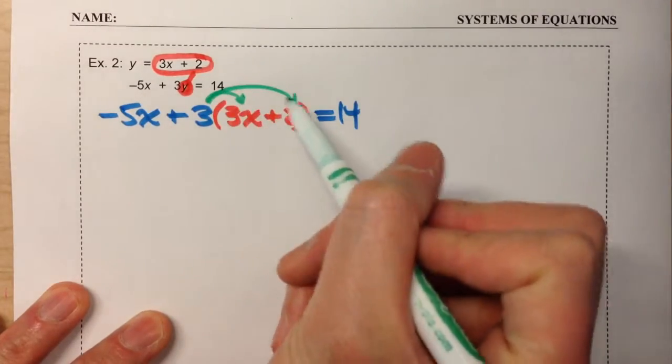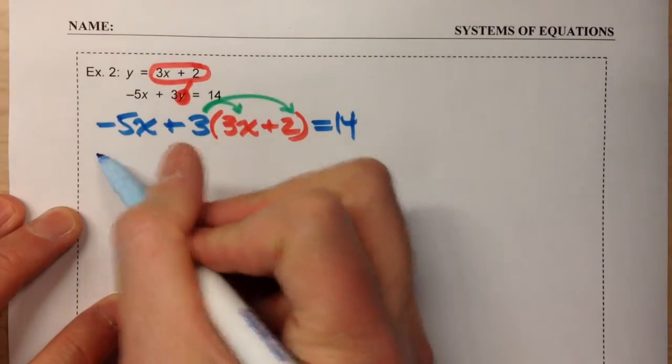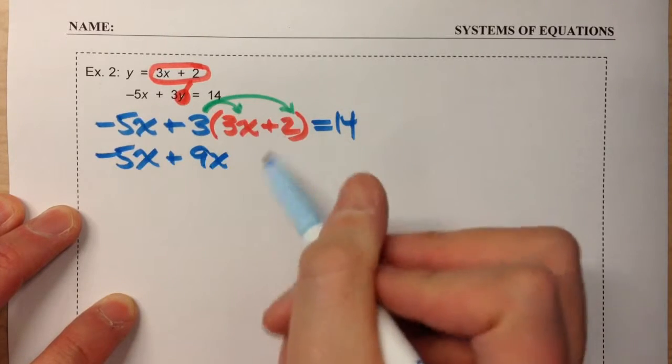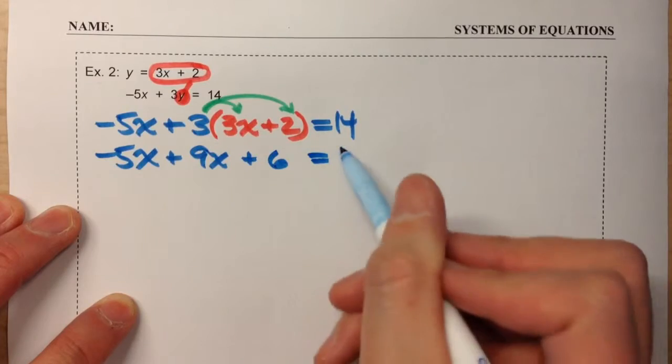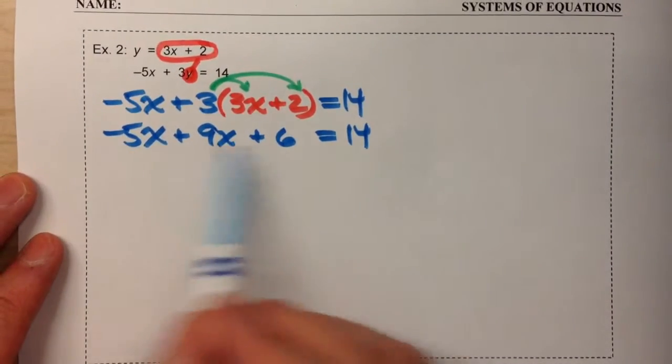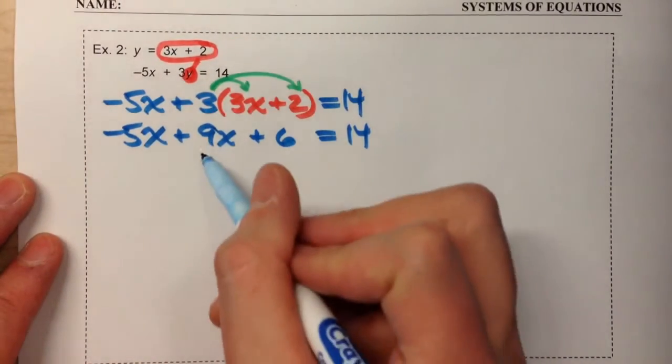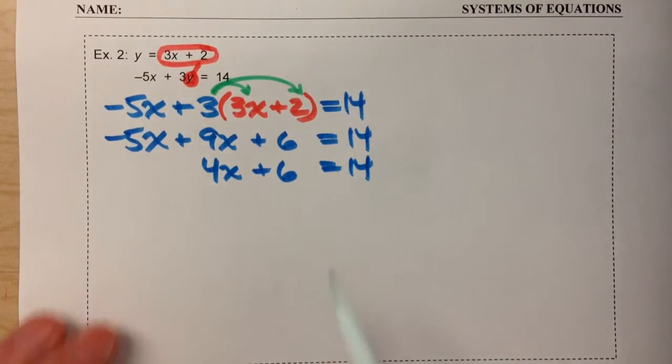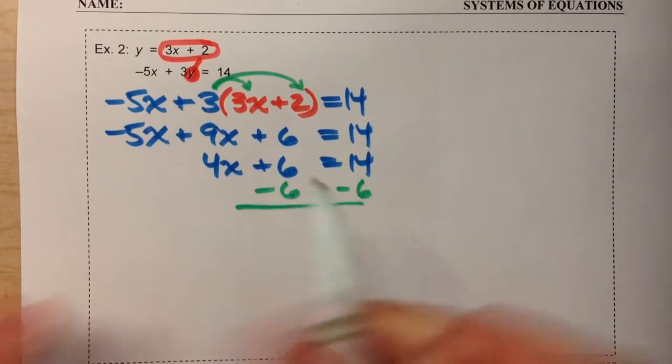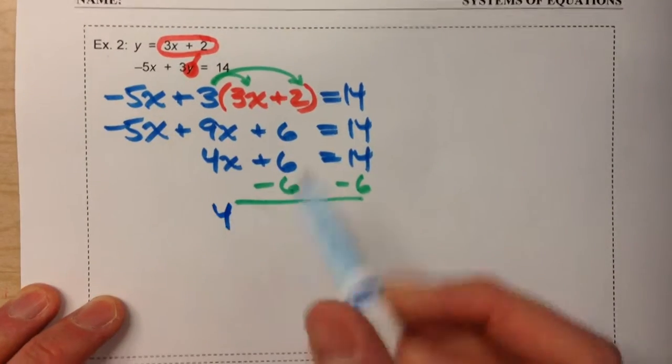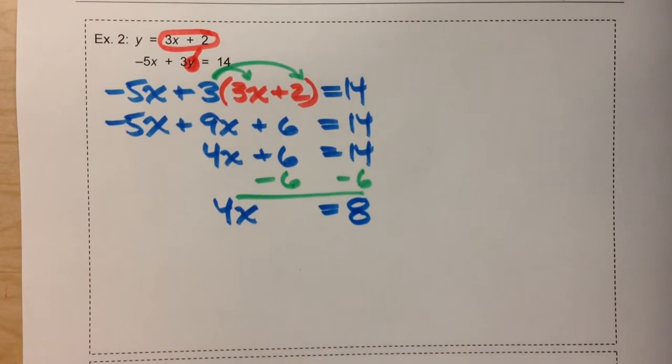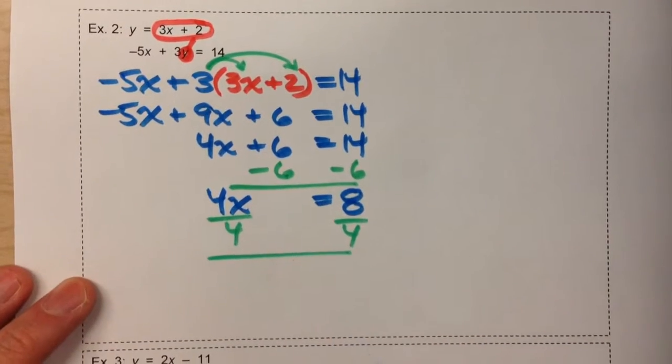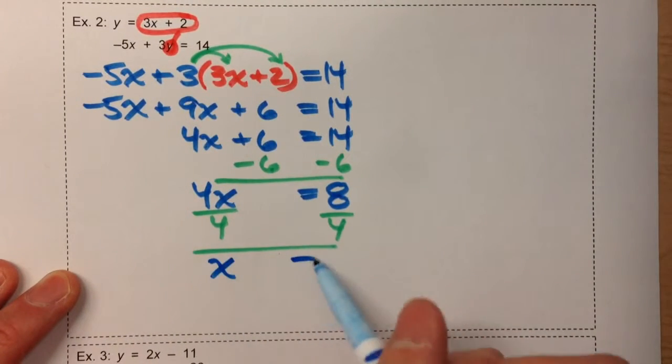So use your distributive property. Negative 5x plus 9x plus 6 equals 14. I'm going to simplify this by combining like terms. And now it's just a matter of undoing this. Minus 6 on both sides. 4x equals 8. Divide by 4 on both sides. x equals 2.